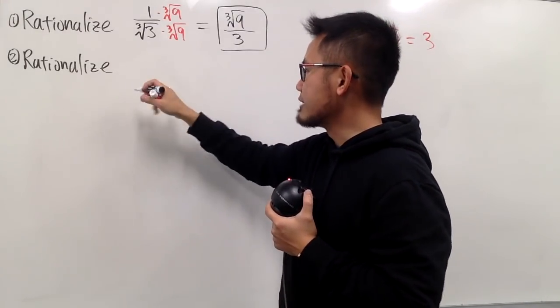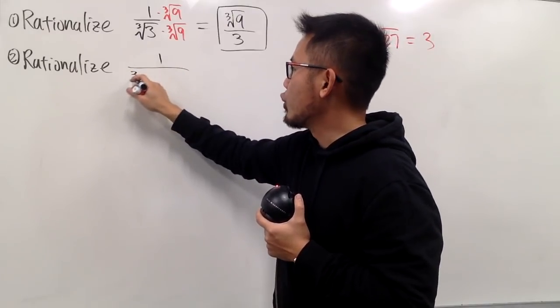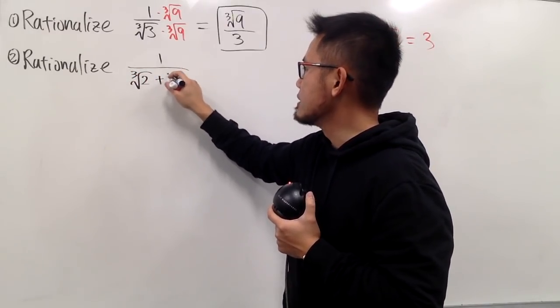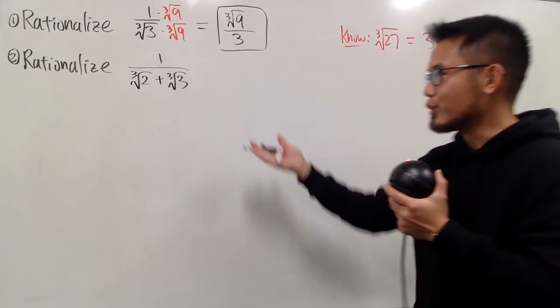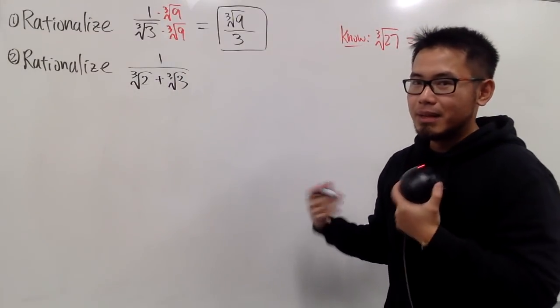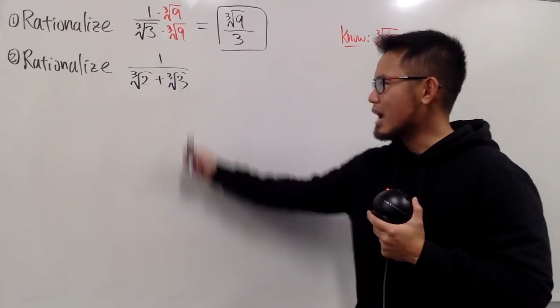Have we ever thought about how to rationalize the denominator, for example, like this? 1 over the cube root of 2 plus the cube root of 3. And this is interesting because we don't usually see this in the elementary algebra class, or intermediate algebra class, right? We only deal with the square roots.